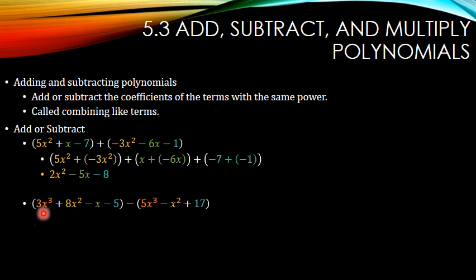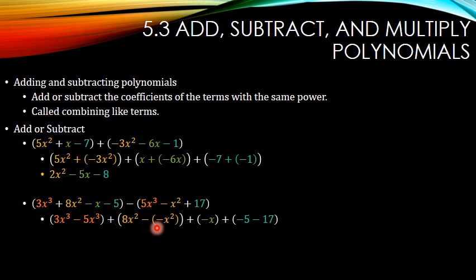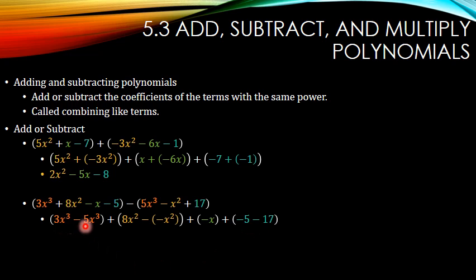Again, combine the like terms. So I have the x-cubes, the x-squares, the x's — just that one x — and then the constants. And this time we're subtracting, so it's a minus between all of them. So this gives me negative 2x-cubed, 9x-squared, negative x, and negative 22.